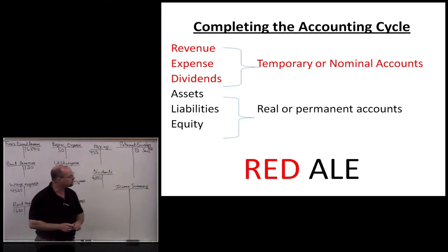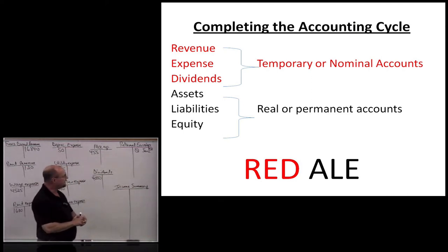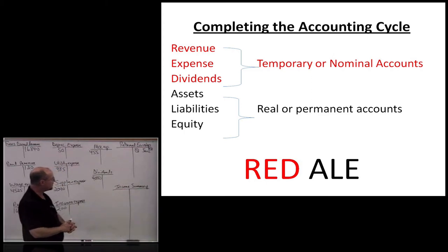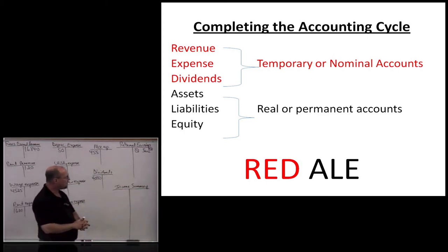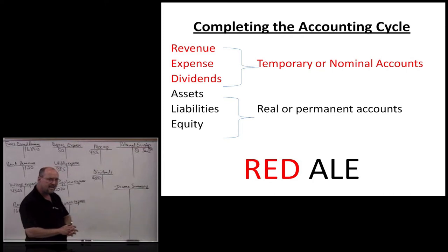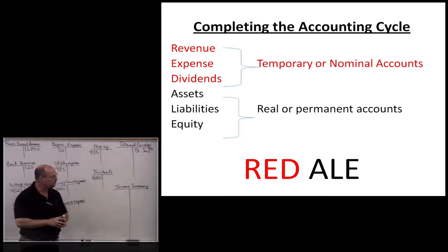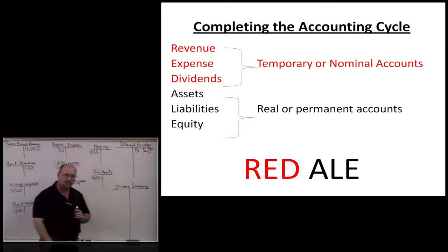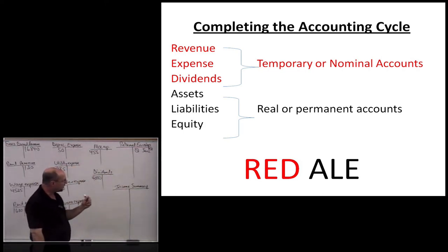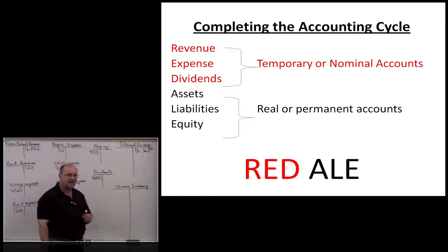Let's look at this slide. Red ALE — this is a good mnemonic. The RED accounts — Revenue, Expense, and Dividends — are temporary accounts, sometimes called nominal accounts. We only close, or set back to zero, the RED accounts, the temporary accounts. Permanent accounts — Assets, Liabilities, and Stockholders' Equity — we do not close out. They're permanent or real accounts.